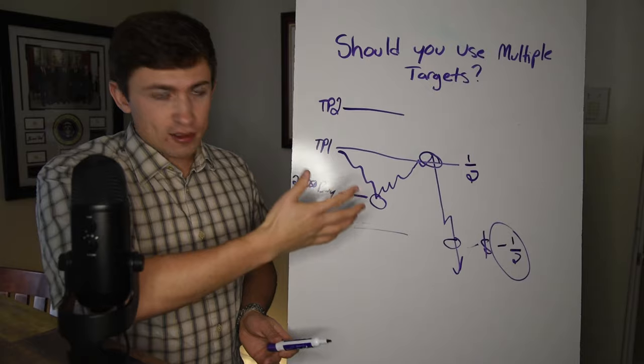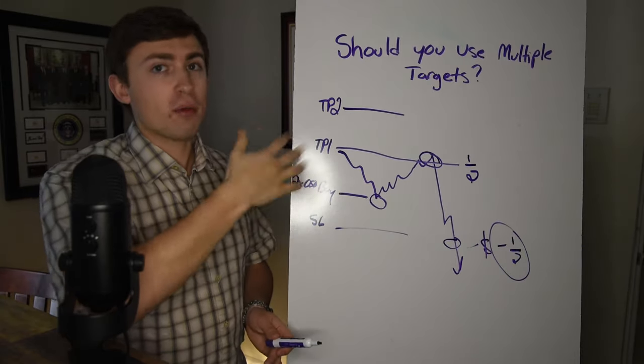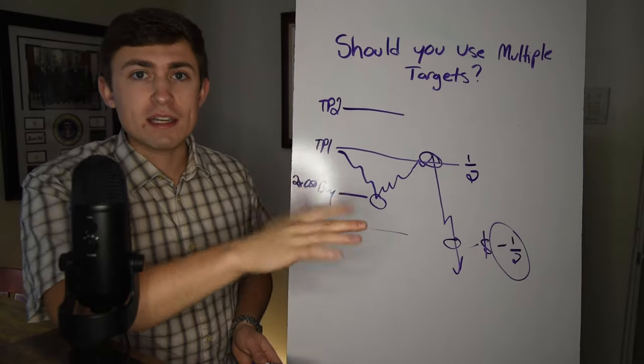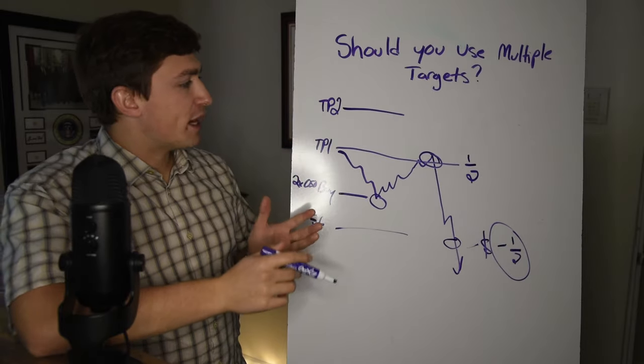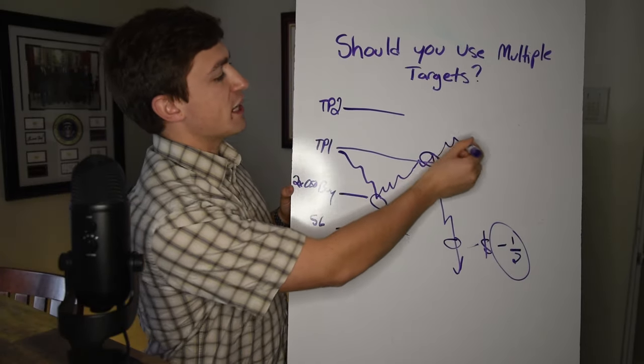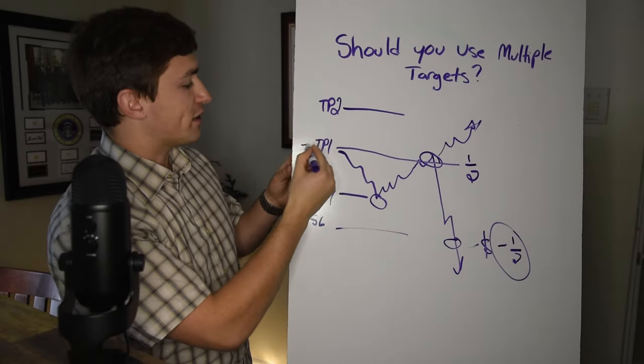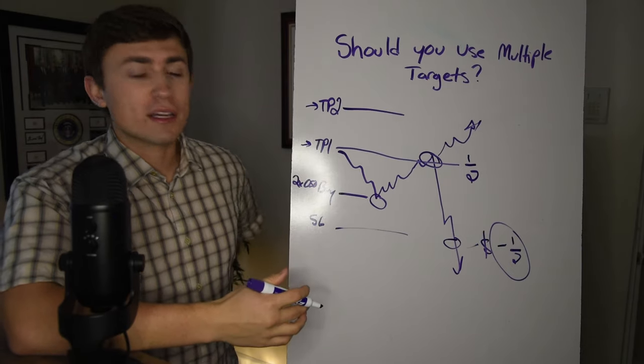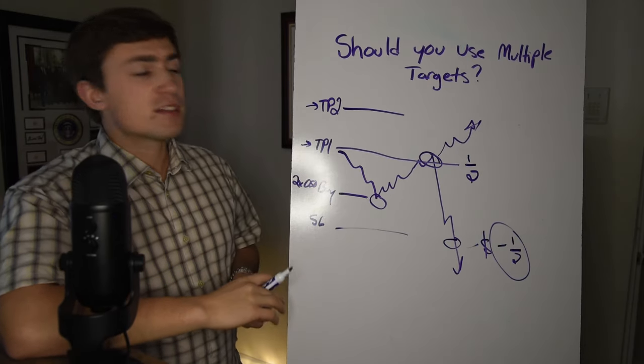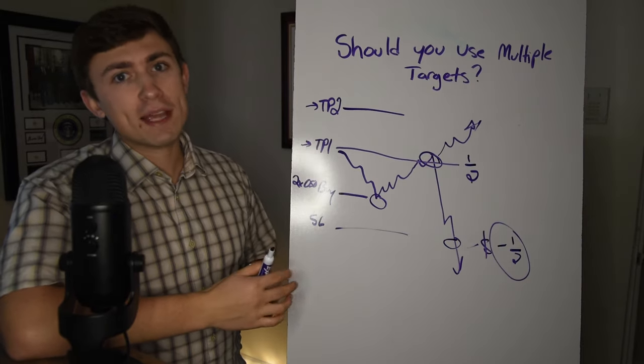I'm going to go ahead and close out part of my profits here. So that way, if the market reverses, then no big deal, that ends up being like a break even trade. The kind of other side of that is that if the market does decide to continue, well, then not only do you profit from your initial take profit here at the take profit one, but you also get a chance to close out an even bigger profit if the market continues in your direction. So this is the idea here. This is one concept of using more than one take profit to your advantage.